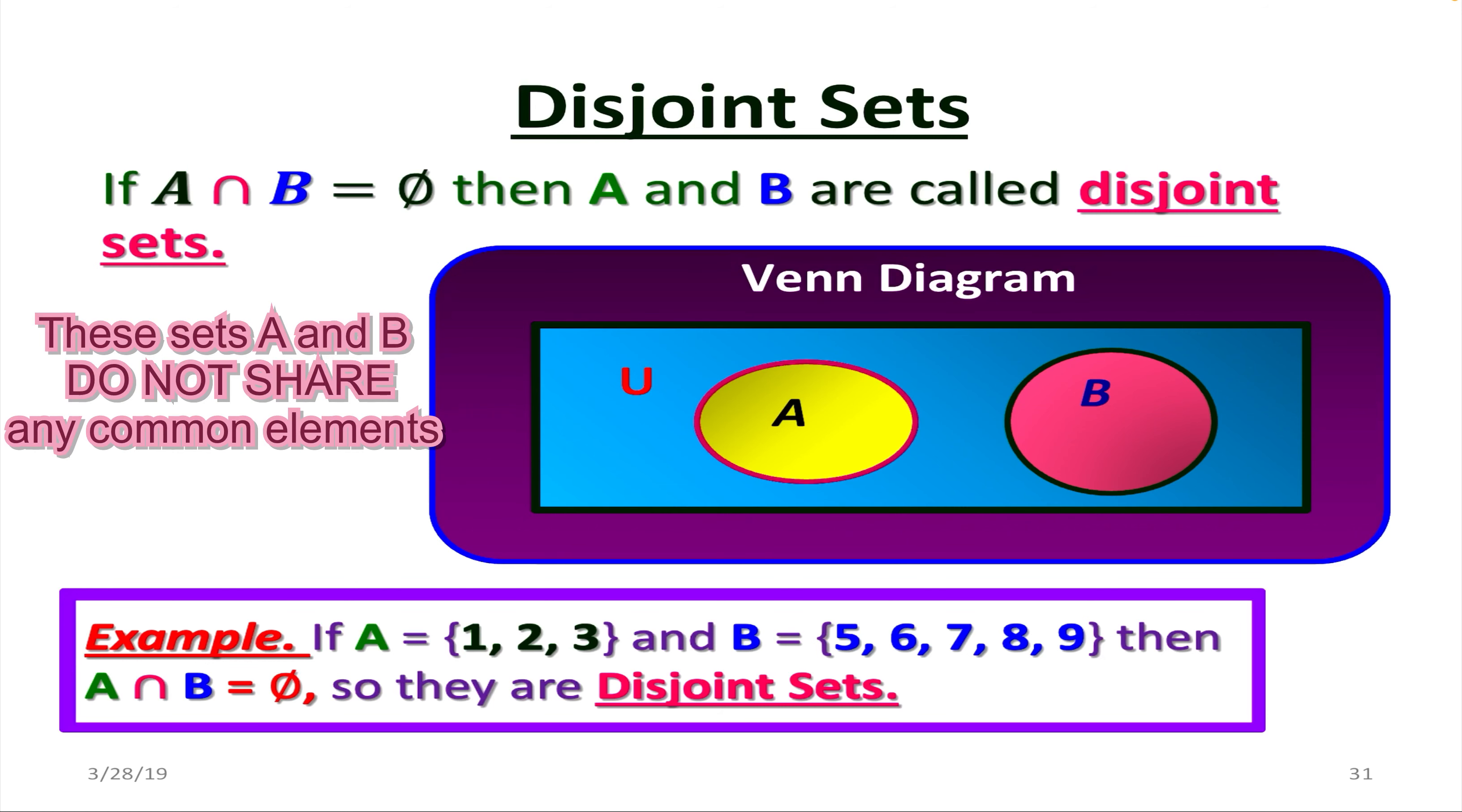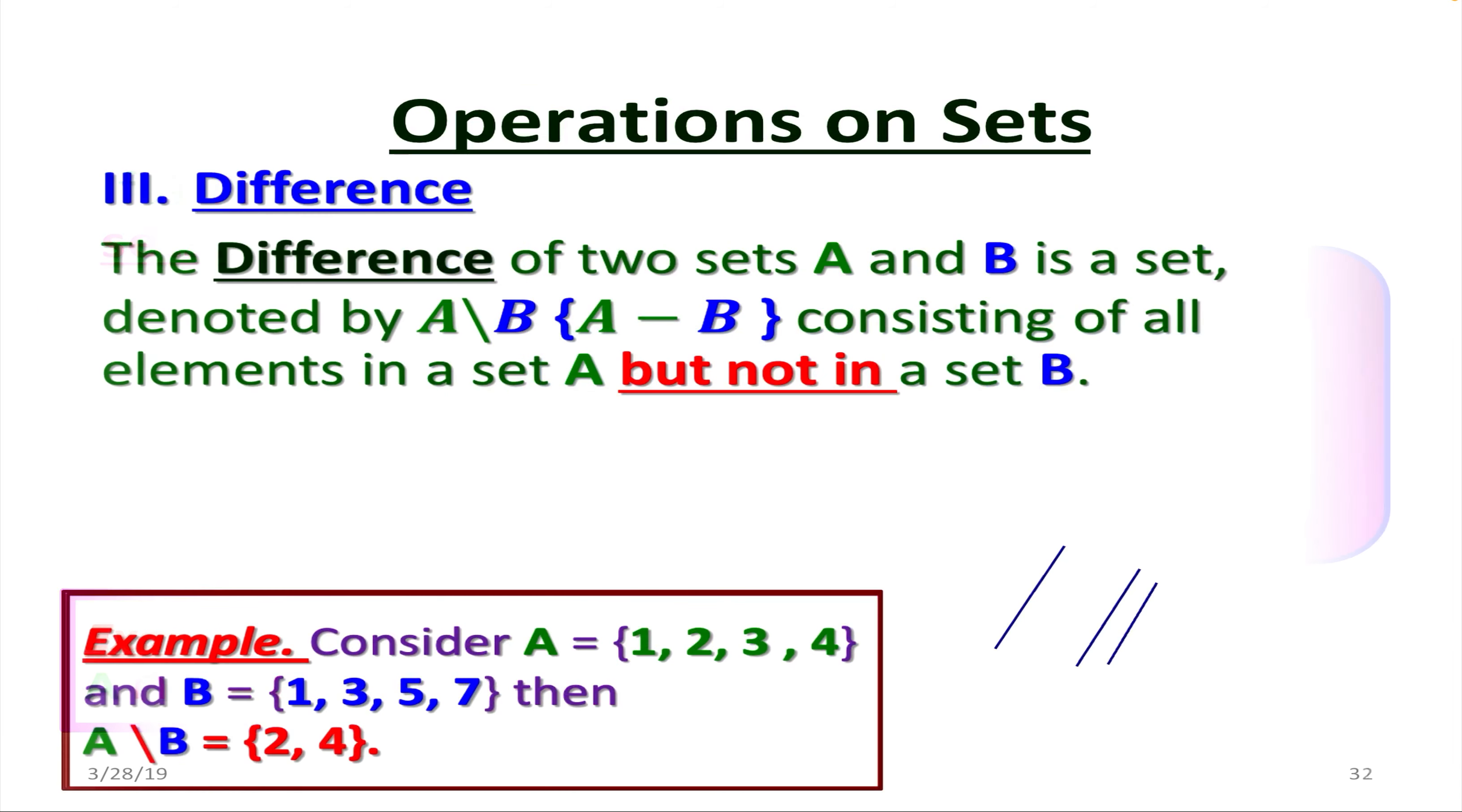For instance, say we have set A containing 1, 2, 3 and set B containing 5, 6, 7, 8, 9. Then obviously they are disjoint sets since there are no common elements, no same elements.